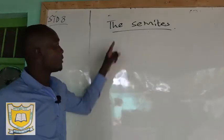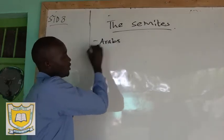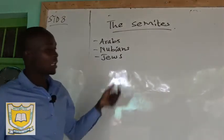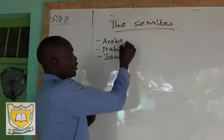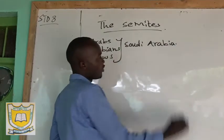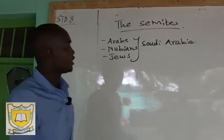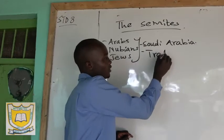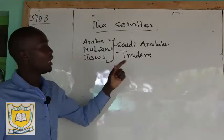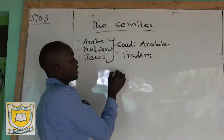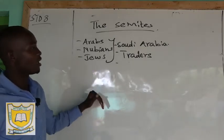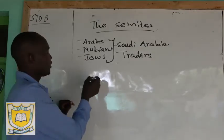Another language group is the Semites. When we talk about Semites we are looking at people like Arabs, Nubians, and Jews. The original homeland of the Semites is South Arabia. The main reason for their coming was trade — they were mainly traders looking for trading items along the coastal areas and in Kenya as a whole.